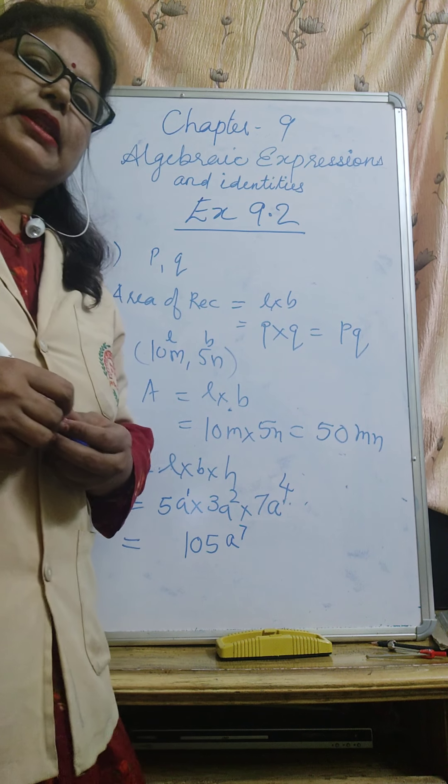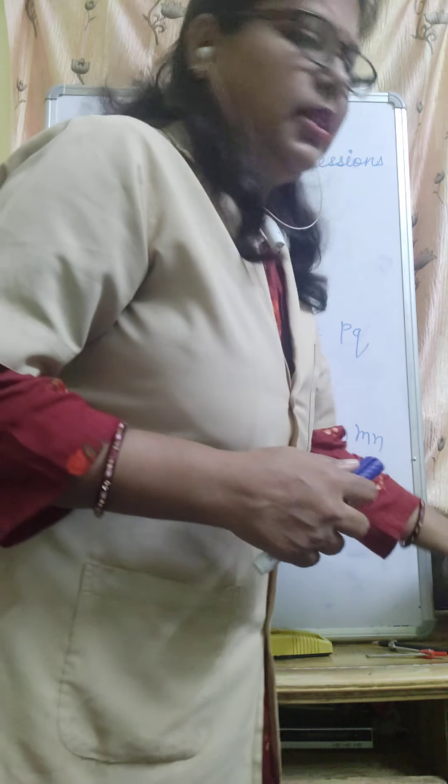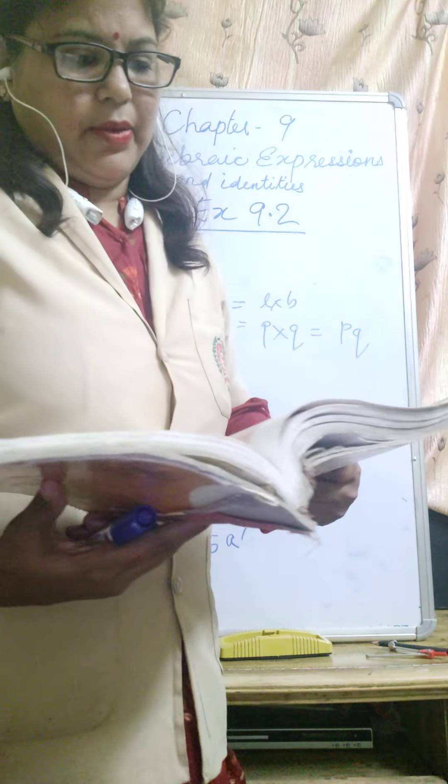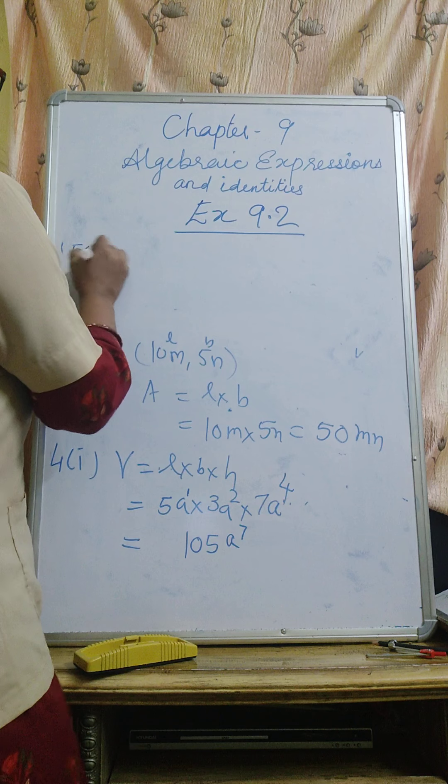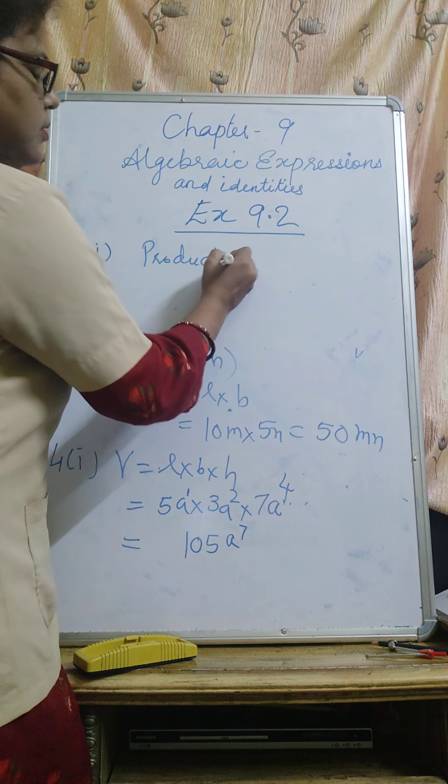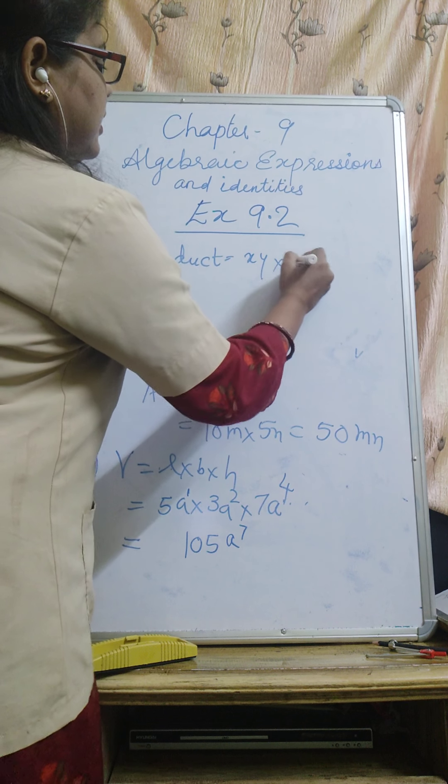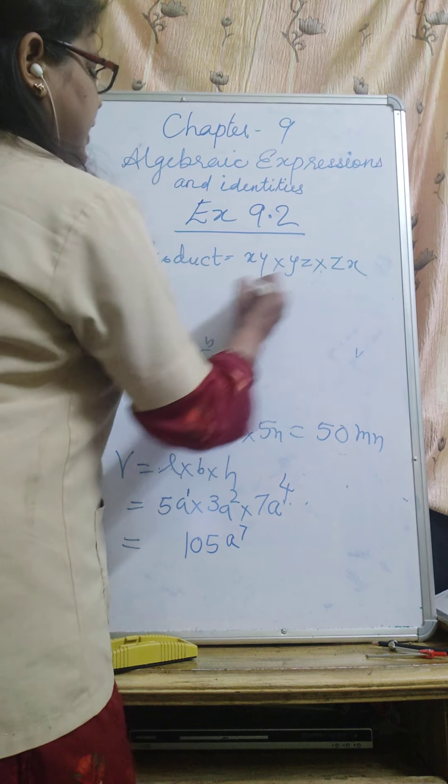Question number 5, obtain the product. In this product we have to find out XY into YZ into ZX. We are finding the product.